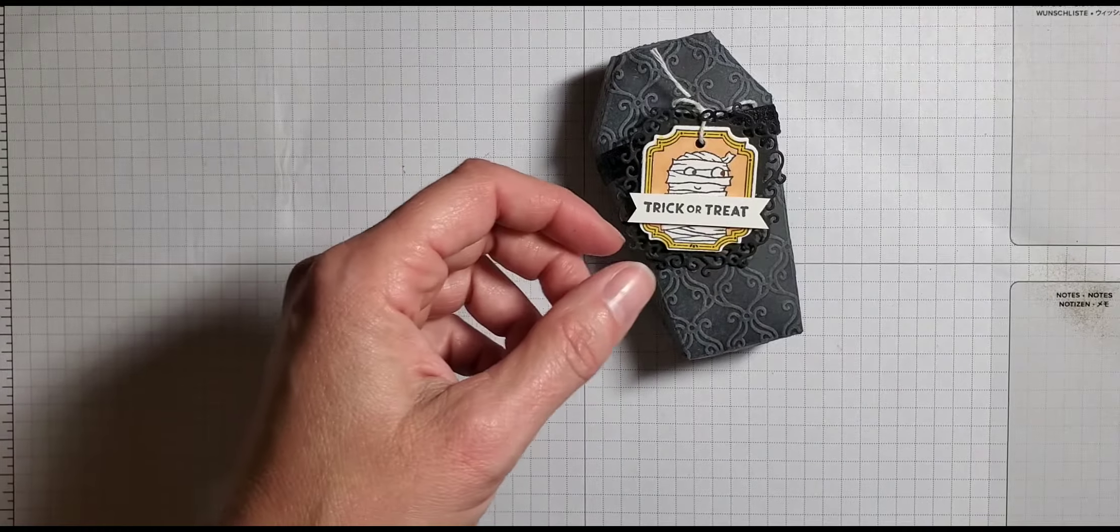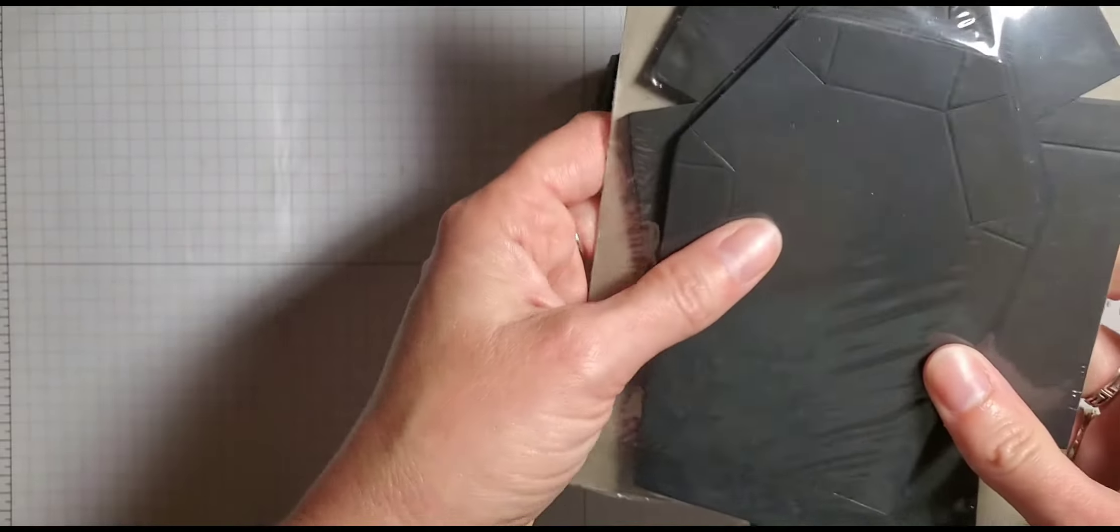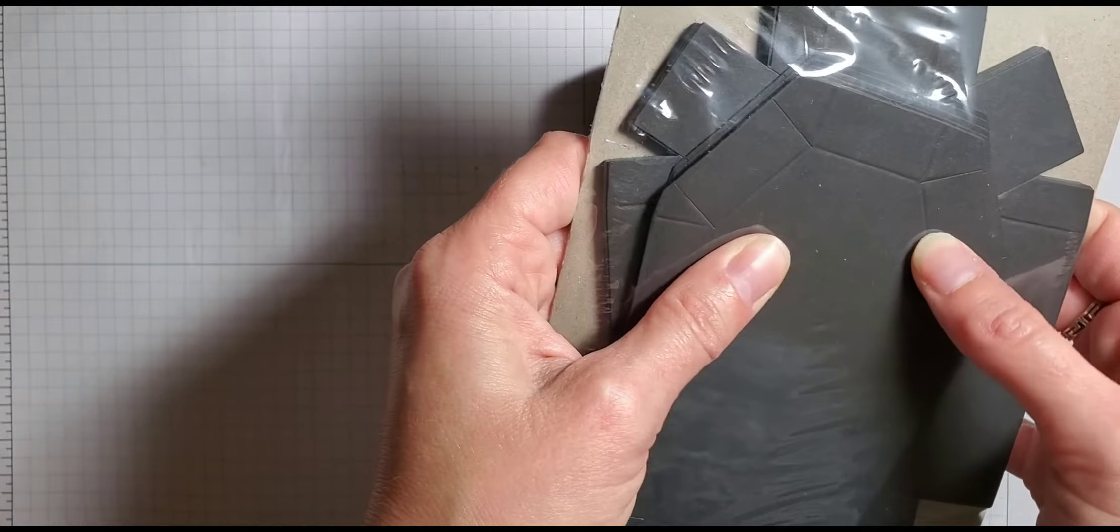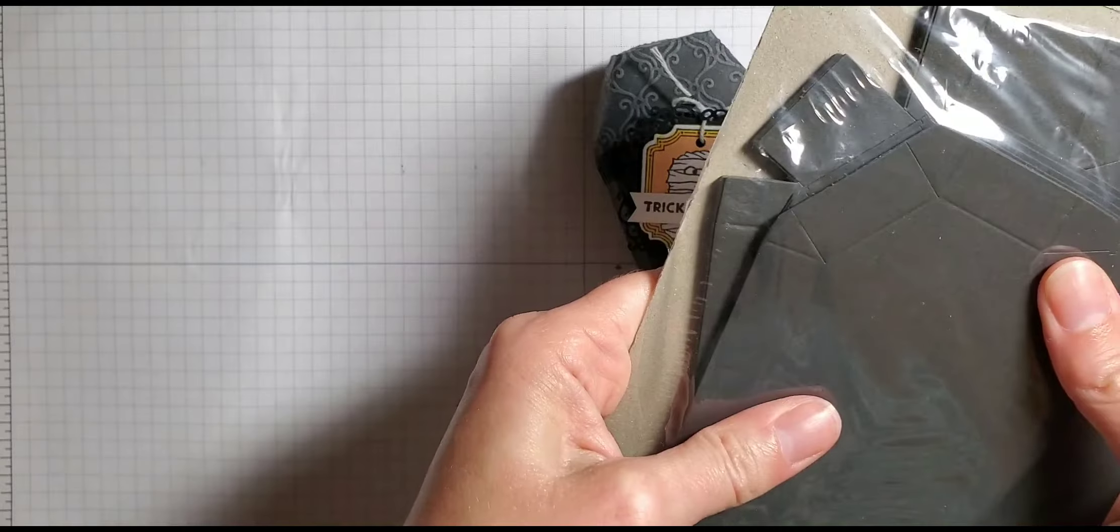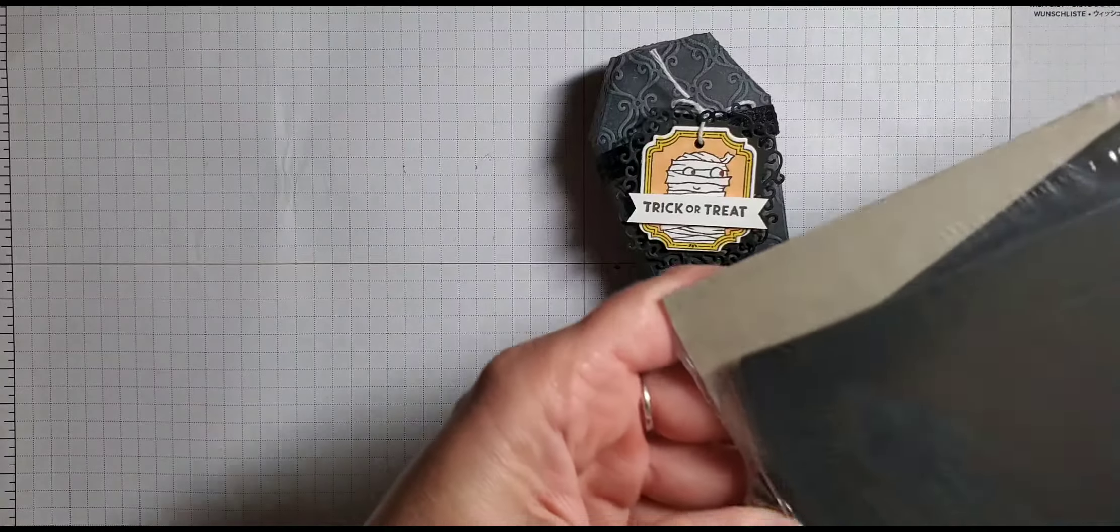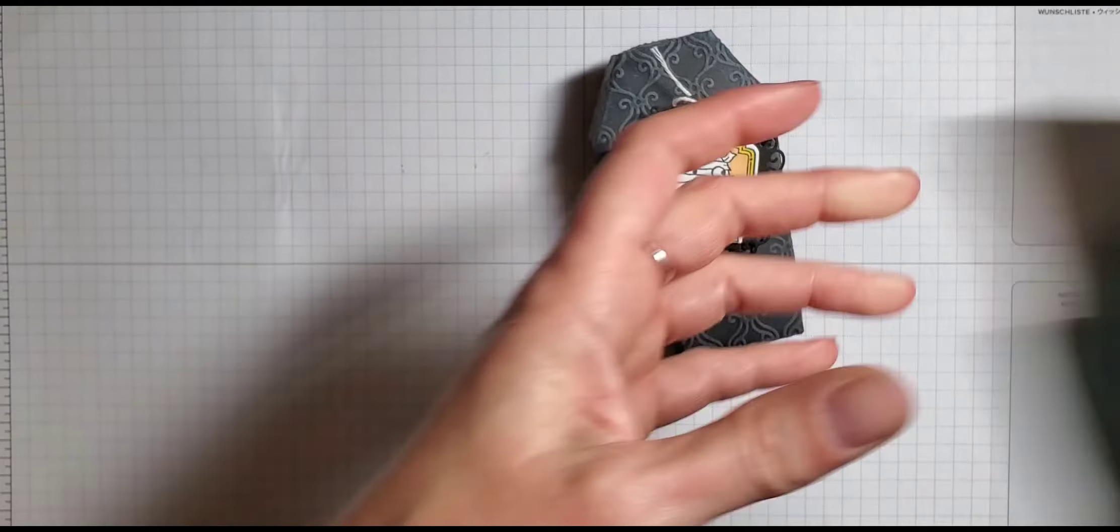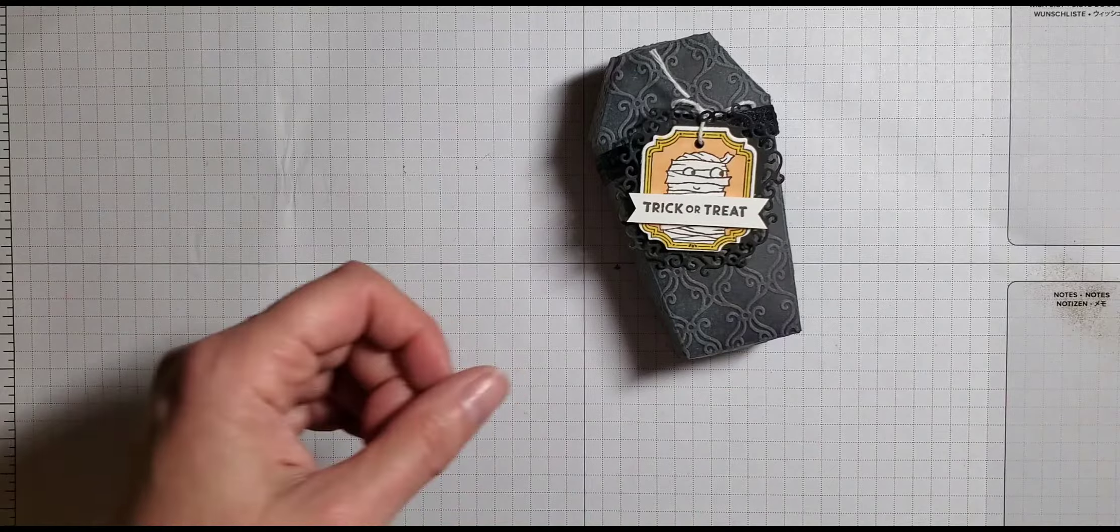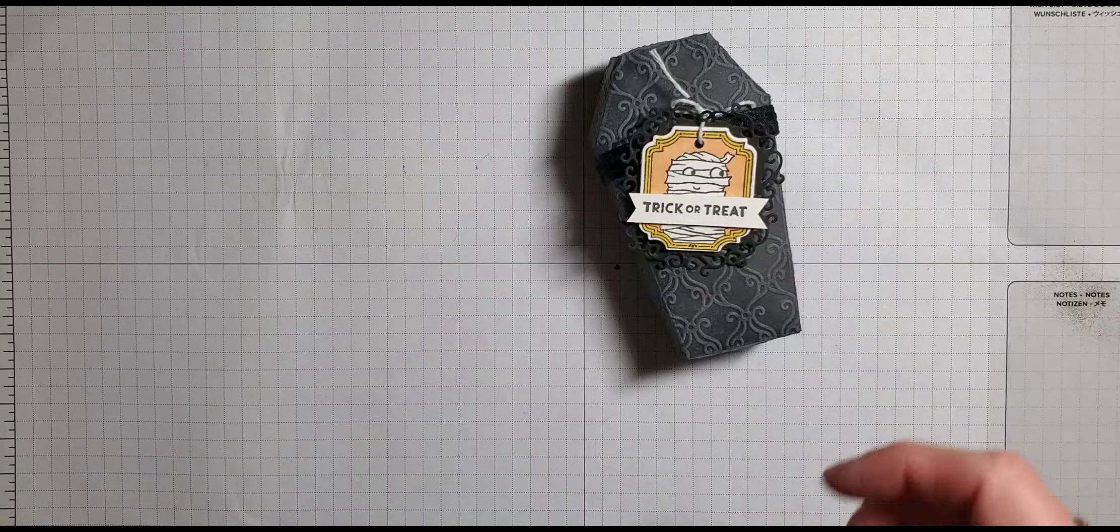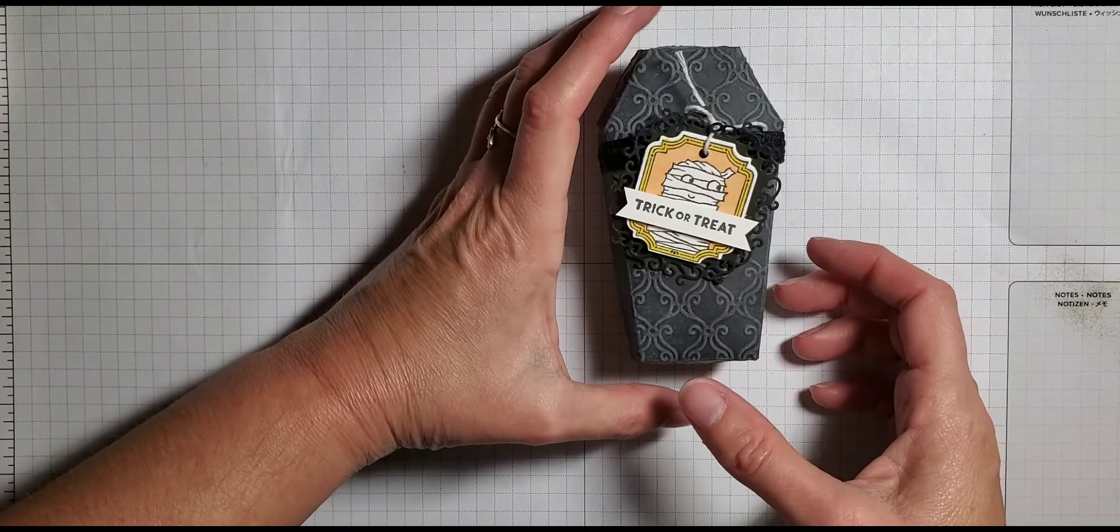You can see they come in a cute little package. So they're already die cut and scored and you get the bases and the tops and you get 12 in each package. So it's really cute. I think they're like $7 or $8.